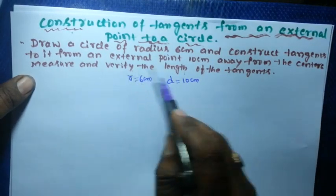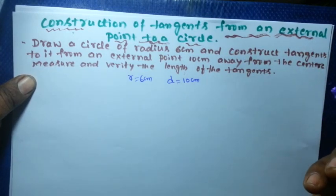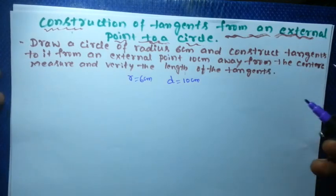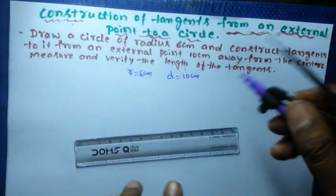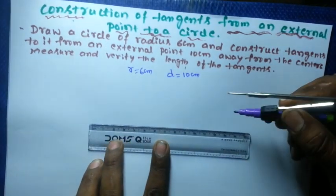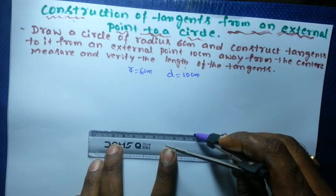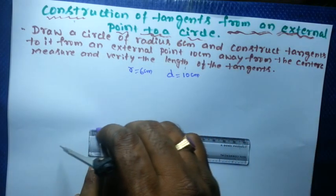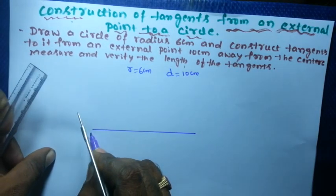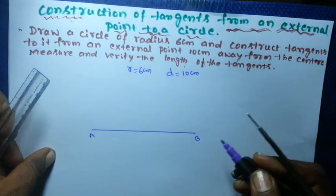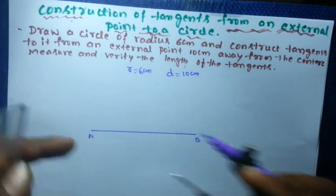We should also measure and verify the length of the tangent. Now draw a line of length 10 centimeters. This line is 10 centimeters — give it the name A and B.